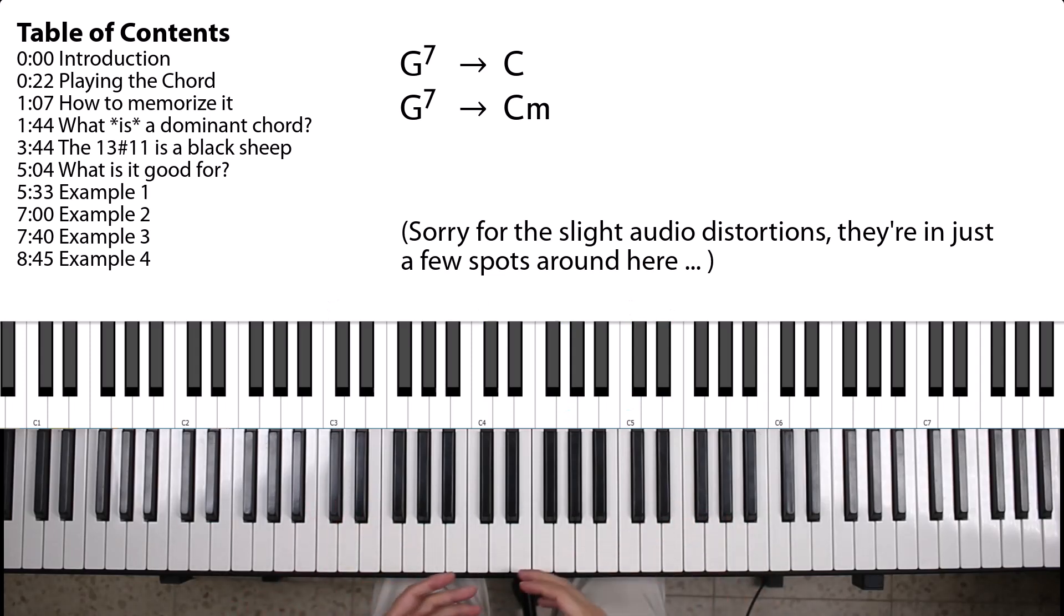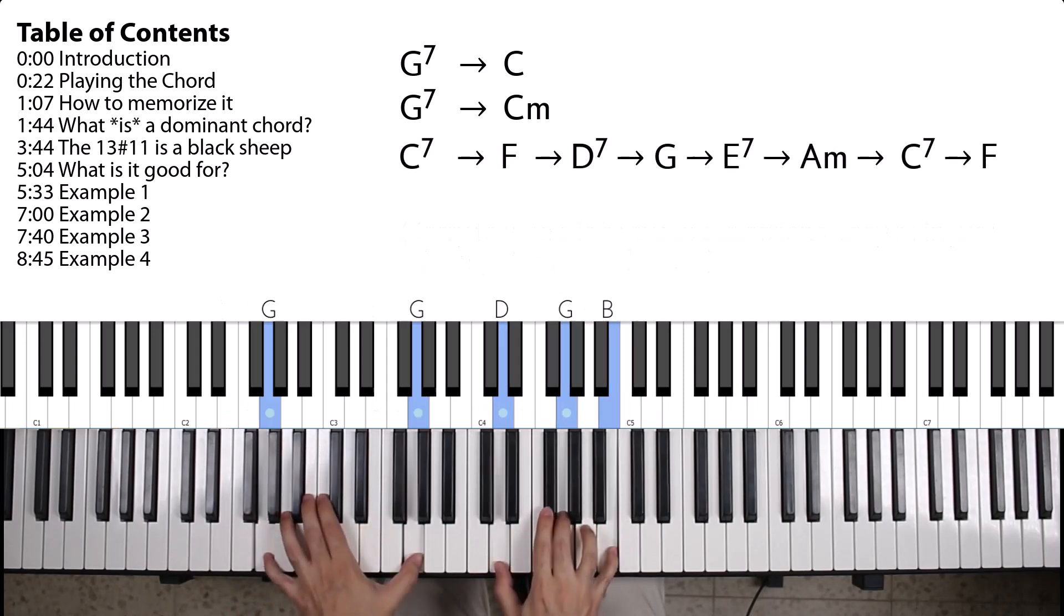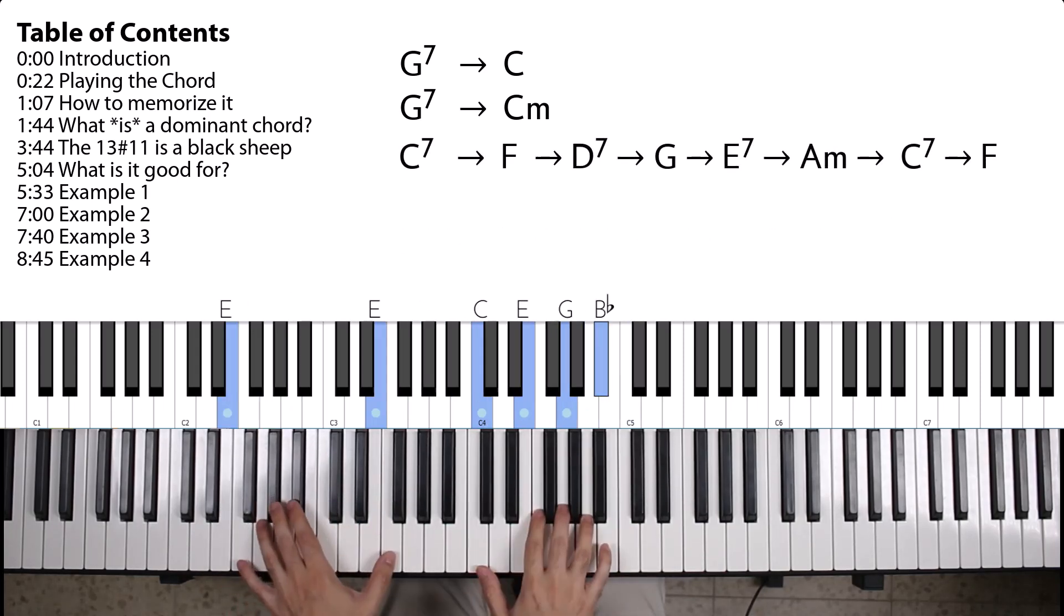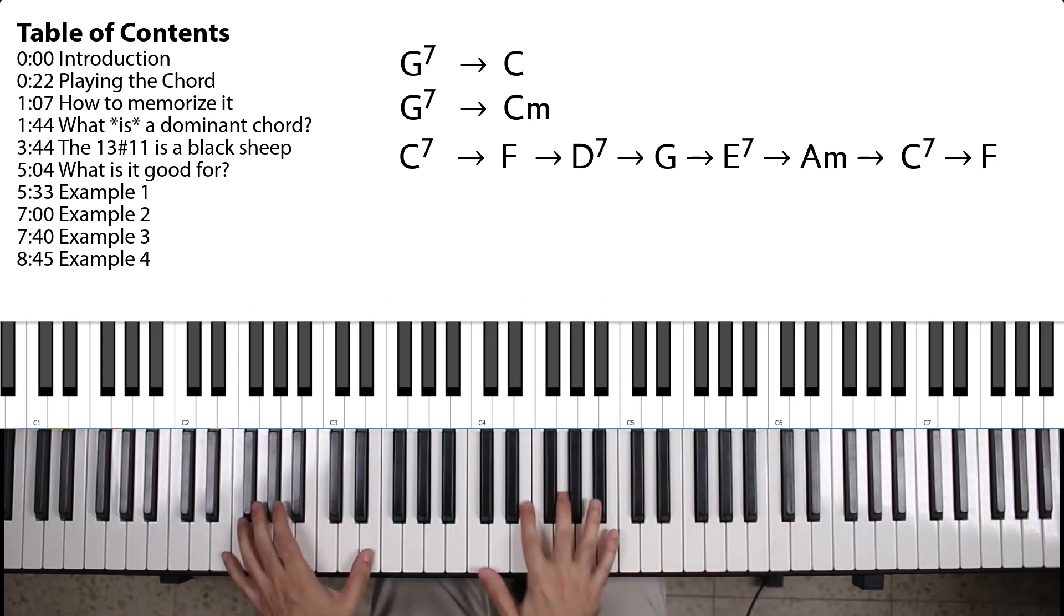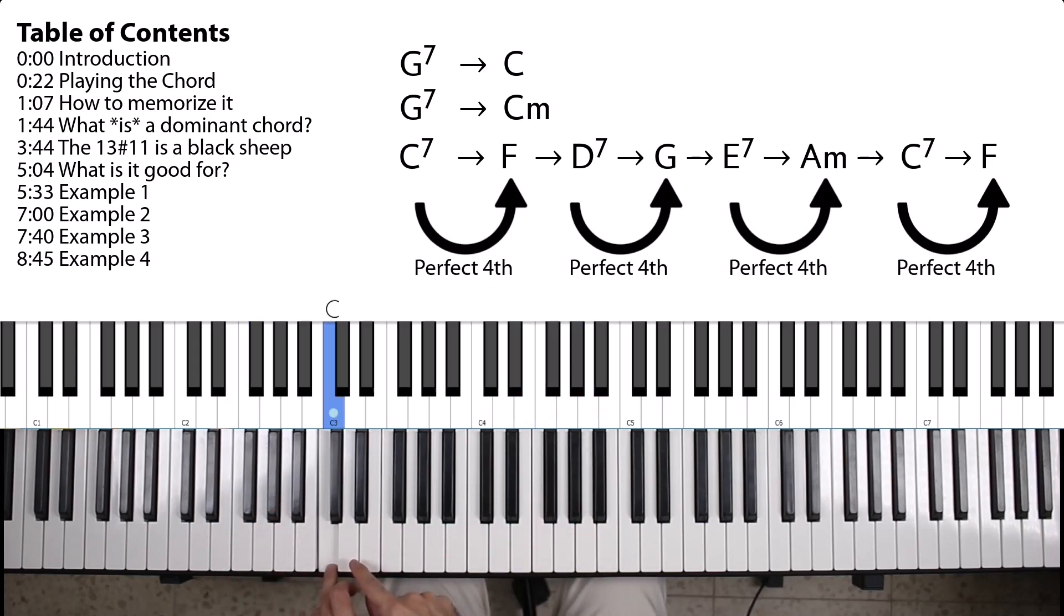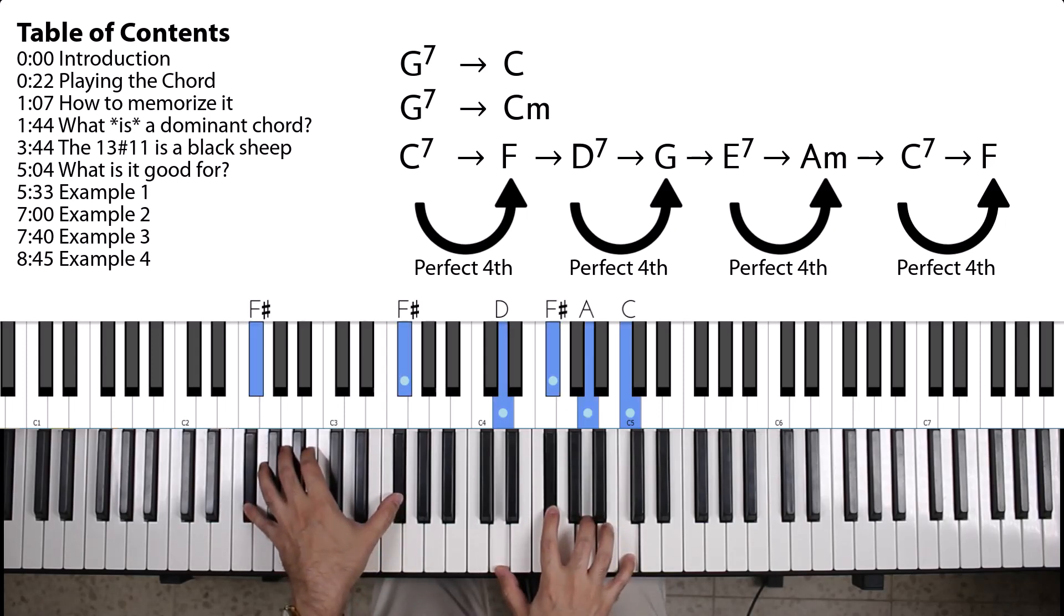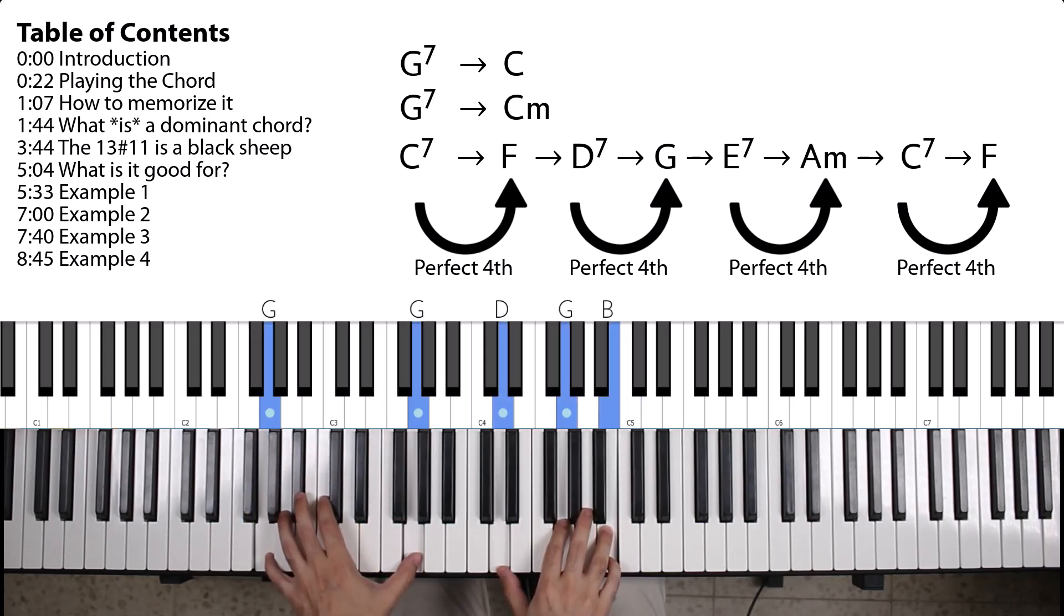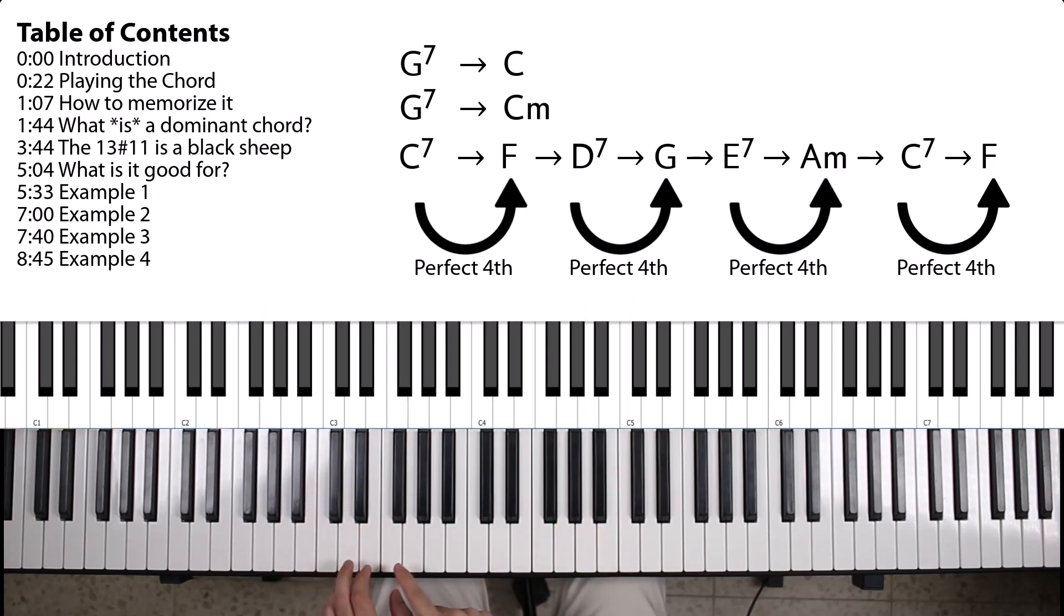And I can string these sort of progressions along. For example, something that maybe Beethoven would do. C dominant 7, resolving to an F major, which is a perfect 4th above it, right? Because C, go up a perfect 4th, you get an F. D dominant 7, resolving to a G. Again, G is a perfect 4th above the D.